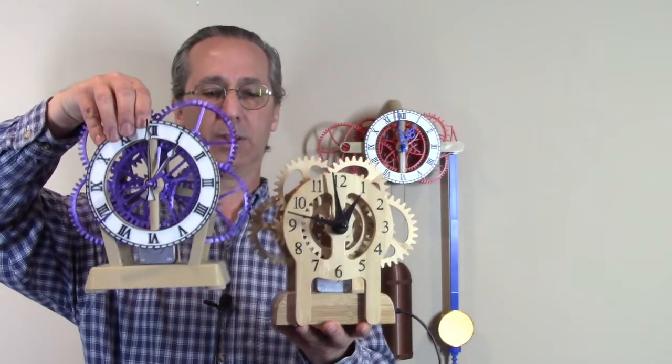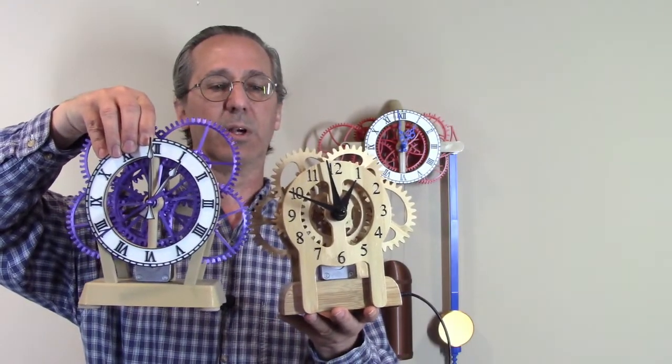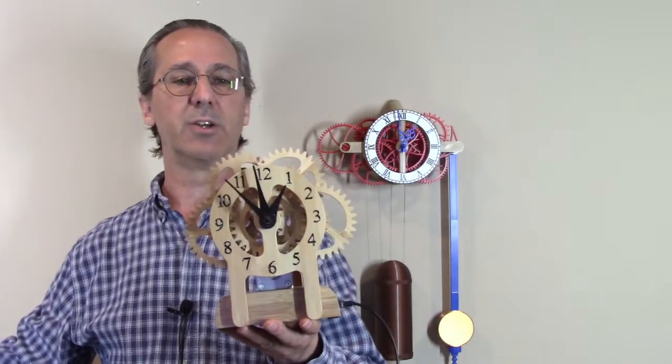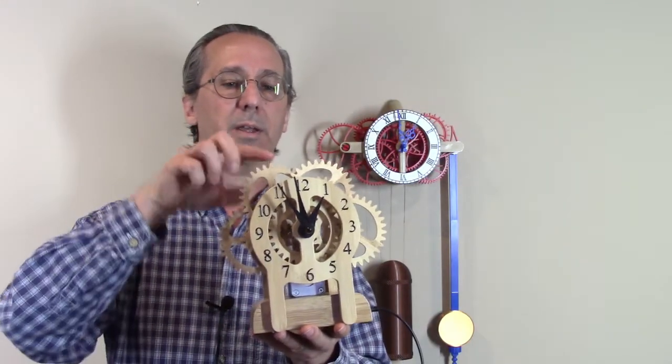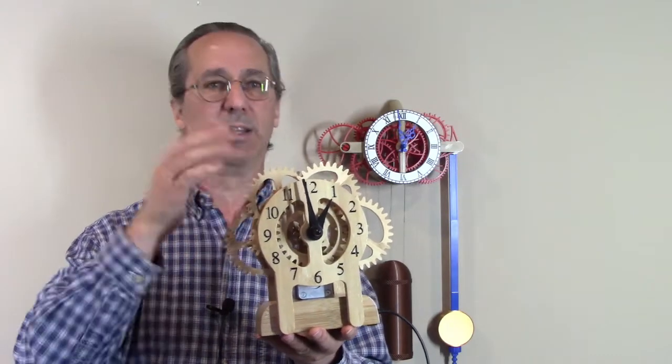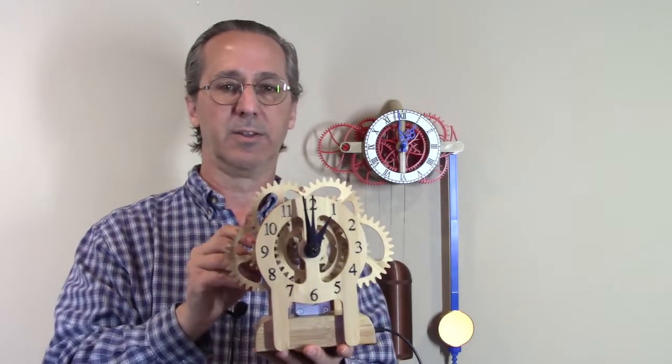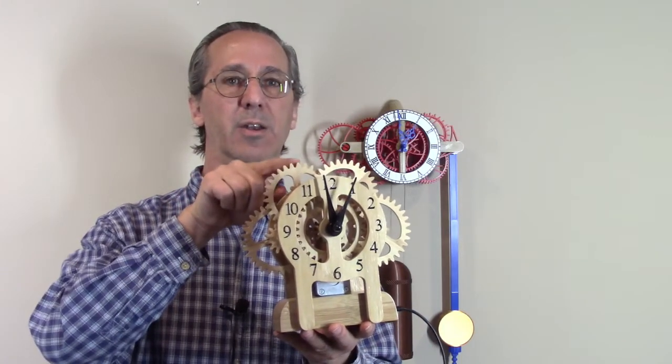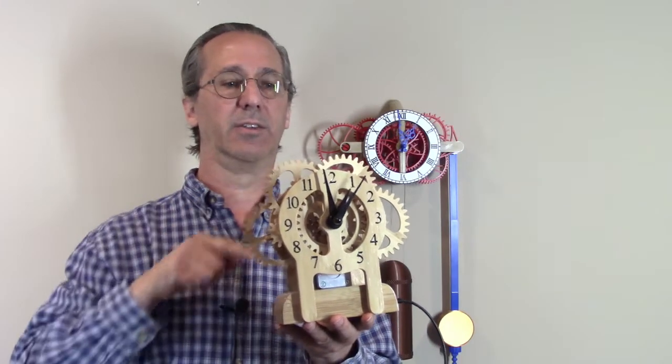You can see that the two designs are very similar. The gear ratios have been updated. Still 60 to 1 between the second and the minute hand and 12 to 1 to the hour hand, obviously, but the teeth are a little bit bigger and rounded, easier to cut on a CNC router.